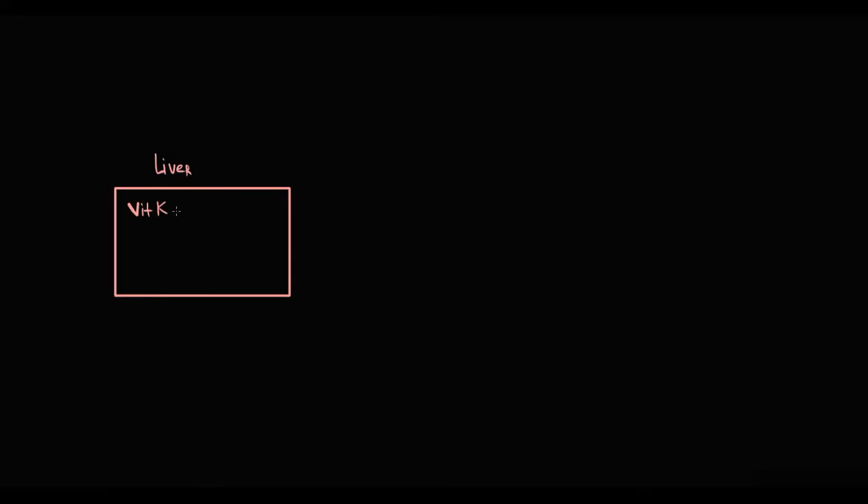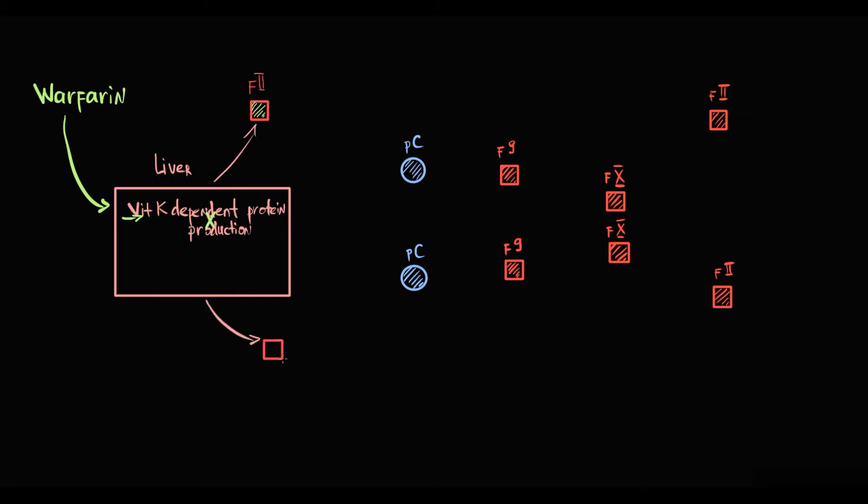To explain this, it's liver tissue where protein C and procoagulant factors are produced. In the blood there are factors 2, 9, 10, and also protein C. And when a patient takes warfarin, warfarin disrupts synthesis of vitamin K-dependent proteins—basically warfarin alters their synthesis in the liver tissue, and as a result the liver begins to produce broken vitamin K-dependent proteins. So warfarin makes them ineffective.